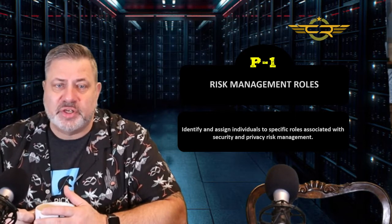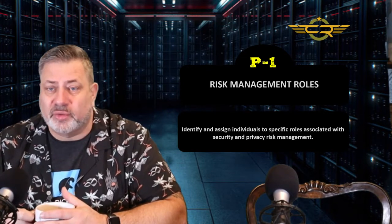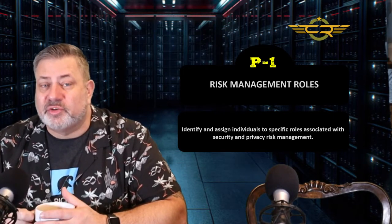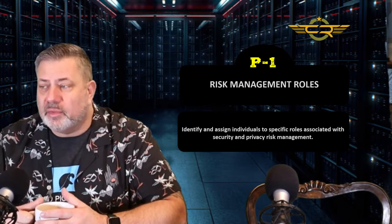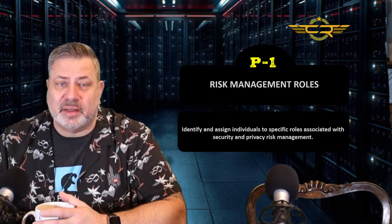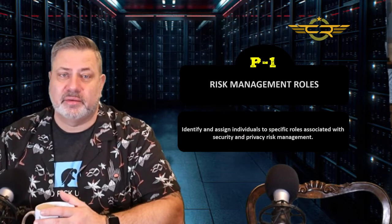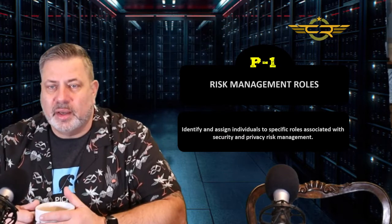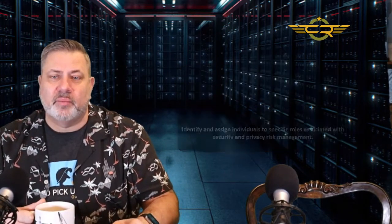We think about roles like the Chief Security Officer, the Chief Information Security Officer, or the Information System Security Officer — the ISSO. All these roles need to be documented. They need to be put down in writing — that Joe Smith is assigned as an ISSO. We need to go through the organization, figure out who those people are, and get them all assigned.